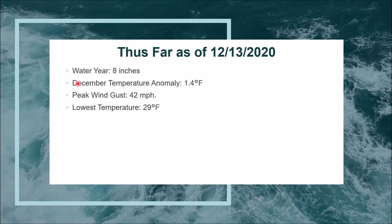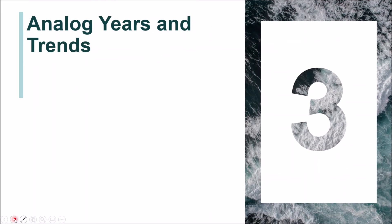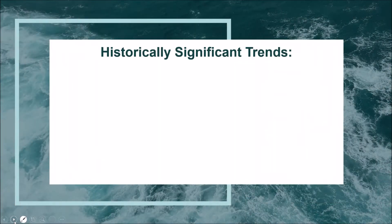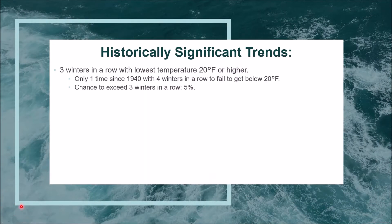As for what's happened thus far: we've had eight inches of rainfall since October, which is a little above average — specifically 1.4 degrees above average in temperature. Our peak wind gust has been 42 miles per hour, and the lowest temperature so far has been 29 degrees, which occurred during October. A historically significant trend I did not mention earlier is that a winter's lowest temperature has never occurred in October.